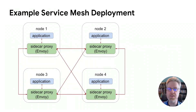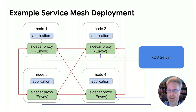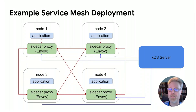Why is XDS useful? Here's a simple example of a typical service mesh deployment. Each compute node has both an application and an Envoy sidecar proxy. IP tables is used to ensure that all traffic to and from the application goes through Envoy. Envoy handles all communication between nodes, providing functionality like request routing, rate limiting, and retries, without each application having to implement those features itself. When each Envoy instance comes up, it contacts an XDS server to get its configuration. As new nodes are deployed, the XDS server automatically knows about them, and all nodes always know how to talk to all other nodes.